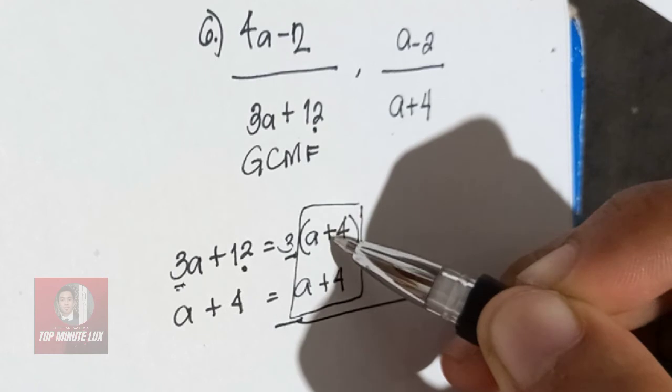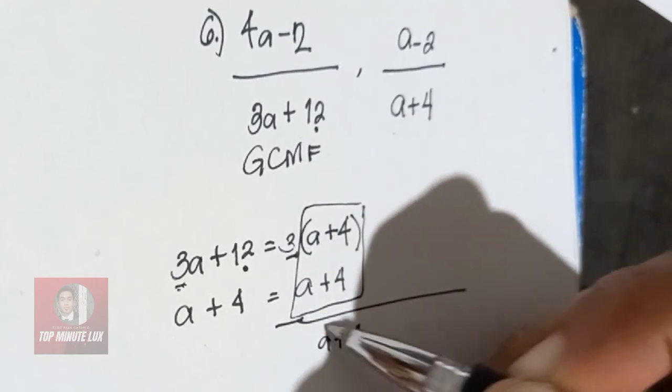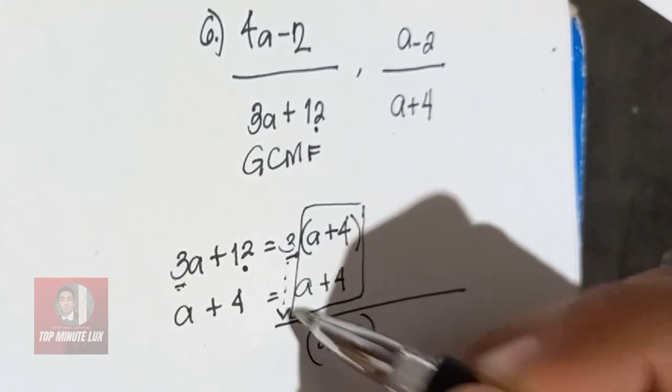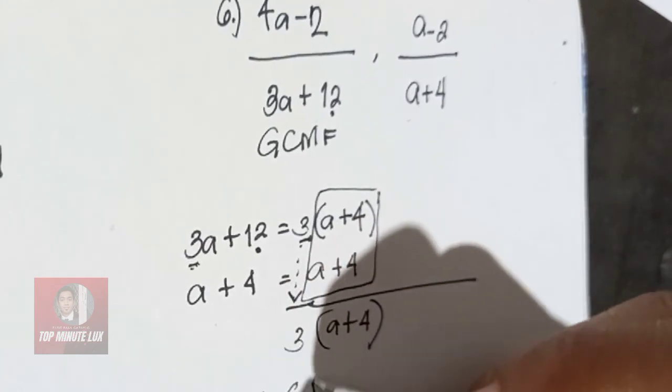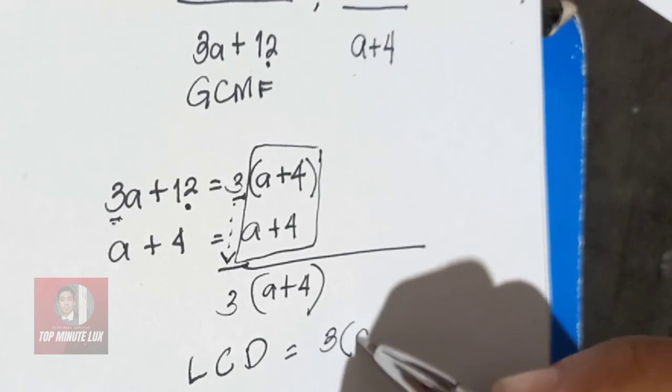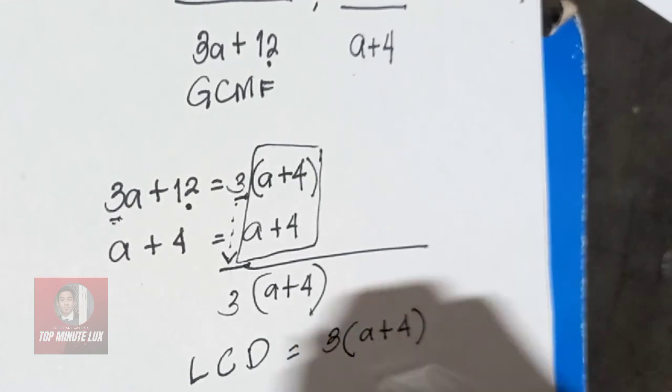The common is, bring down, the common is A plus 4. Open close parenthesis, bring down your A. So the LCD is 3 to the quantity of A plus 4.